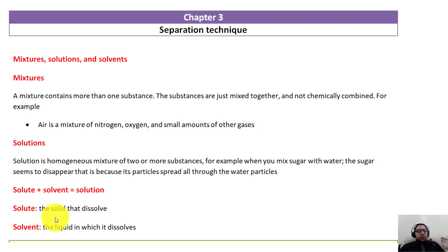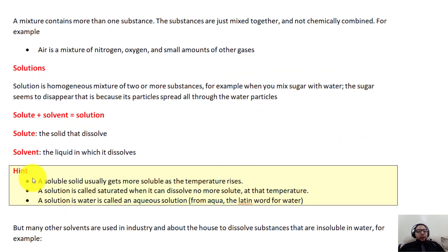Solute plus solvent equals solution. A soluble solid usually gets more soluble as the temperature rises. That's why a cold cup of tea takes less sugar than a hot cup of tea. If you dissolve sugar in cold water you might dissolve two or three teaspoons, while in a warm cup of tea you'll notice it can accommodate more sugar, because the water particles vibrate more, move faster, and the spaces between them increase.